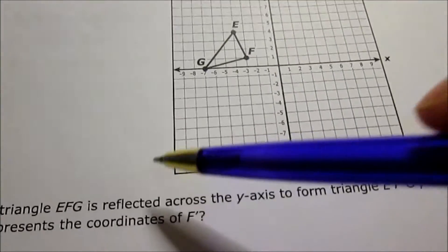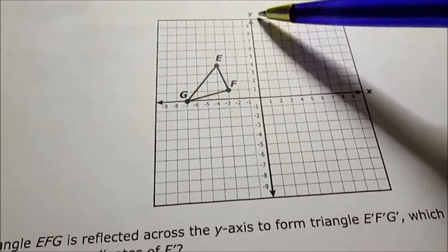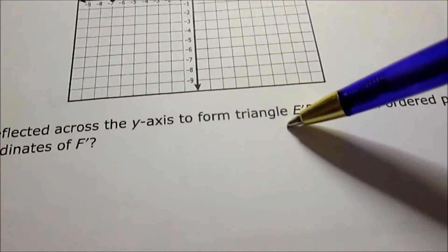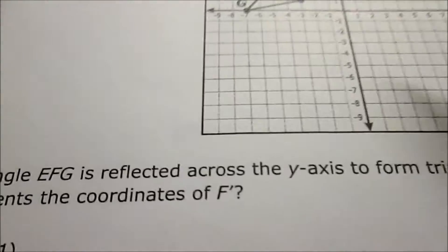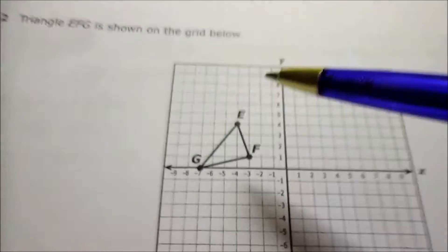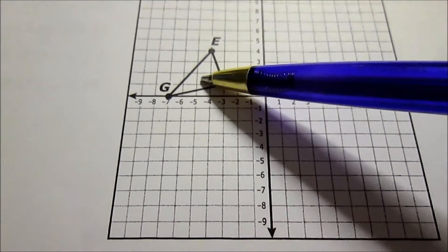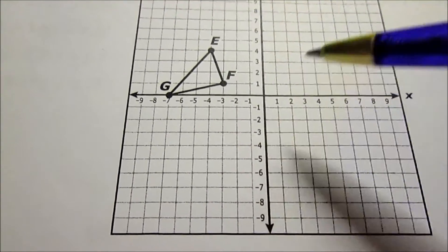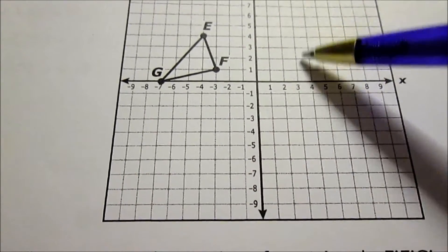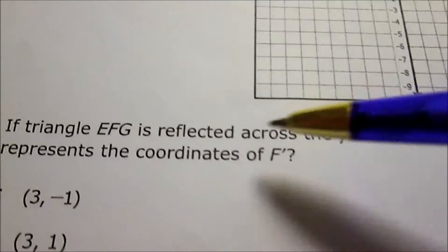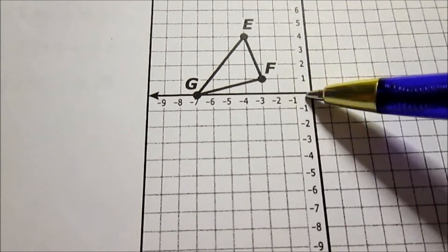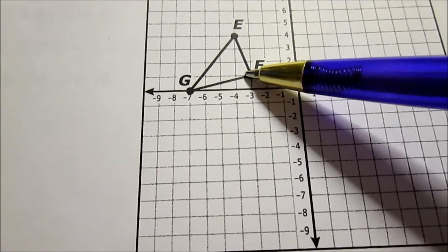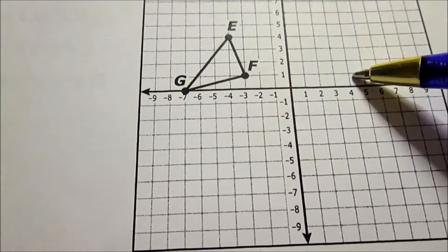It's saying this triangle is reflected across the y-axis, which is here, this long line, the y-axis, to form a new triangle. Which ordered pair represents the coordinates of F prime? Go to the figure, imagine flipping this over. Since it's a reflection, imagine flipping it over this y-axis over here. That means it's going to show up flipped over on this side. Let's look at the original F, because it wants to know the new F. The original F: go over to negative 3 and up 1. Negative 3, 1 is the original point. It wants to know the new point.